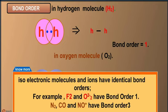Isoelectronic molecules and ions have identical bond orders. For example, F2 and O2 2- have bond order 1. N2, CO and NO have bond order 3.